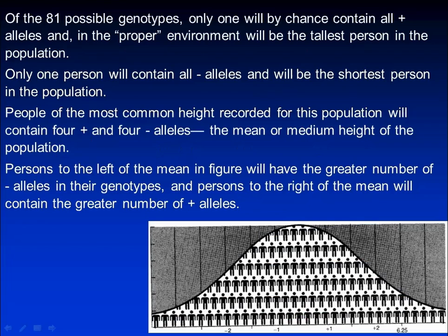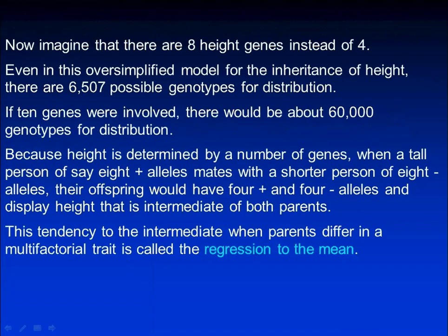Persons to the left of the mean will have a greater number of minus alleles in their genotypes, while persons to the right of the mean will contain a greater number of plus alleles. Now imagine that there are eight height genes instead of four. Even in this oversimplified model, there are over 6,000 possible genotypes. If 10 genes were involved, there would be about 60,000 genotypes.